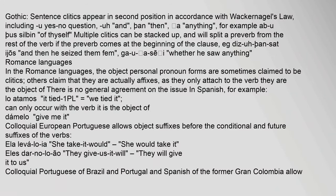In Gothic, sentence clitics appear in second position in accordance with Wackernagel's law, including: '-u' (yes/no question marker), '-a' (and), '-an' (then), '-a' (anything). For example: 'ab u u silben' ('of thyself?'). Multiple clitics can be stacked up and will split a preverb from the rest of the verb if the preverb comes at the beginning of the clause — e.g., 'dis-a-an-sat hijōs' ('and then he seized them') and 'ga-u-a-saíƕ' ('whether he saw anything').